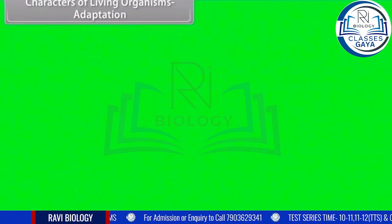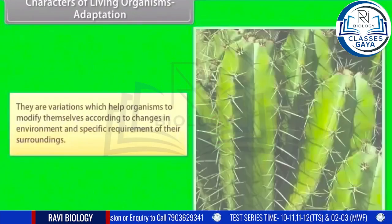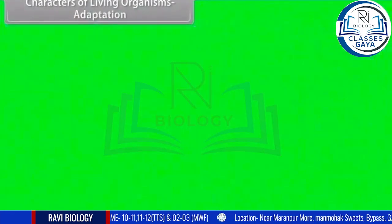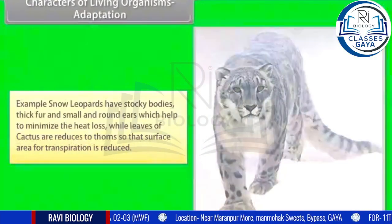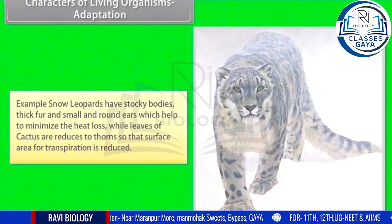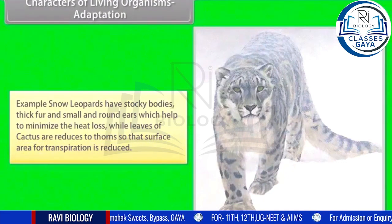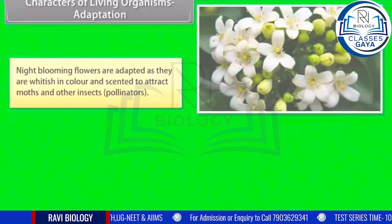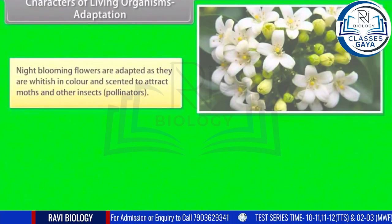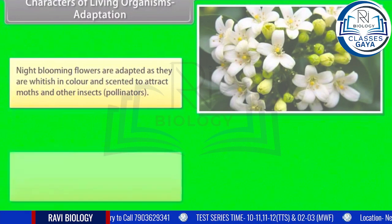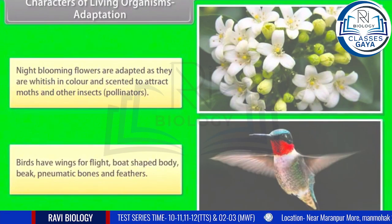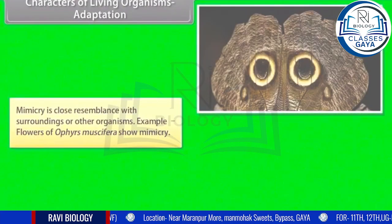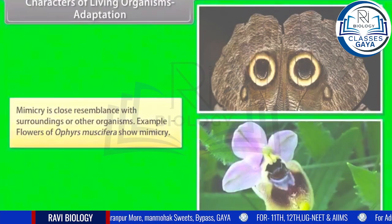Characters of living organisms — Adaptation: adaptations are variations which help organisms to modify themselves according to changes in environment and the specific requirements of their surroundings. For example, snow leopards have stocky bodies, thick fur, and small round ears which help minimize heat loss. Leaves of cactus are reduced to thorns to reduce the surface area for transpiration. Night-blooming flowers are whitish and scented to attract moths and other insect pollinators. Birds have wings for flight, a boat-shaped body, beak, pneumatic bones, and feathers. Mimicry is close resemblance with surroundings or other organisms — for example, flowers of Ophrys musifera show mimicry.